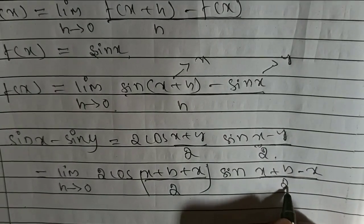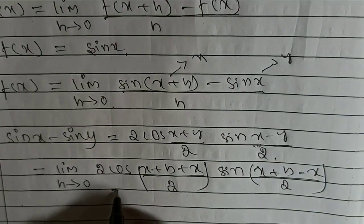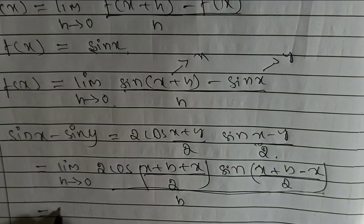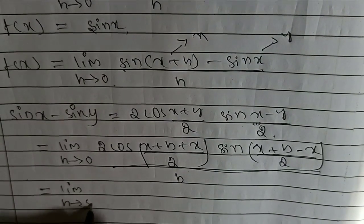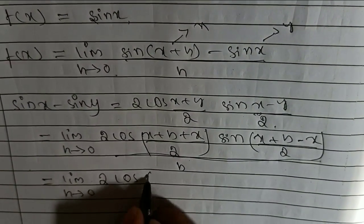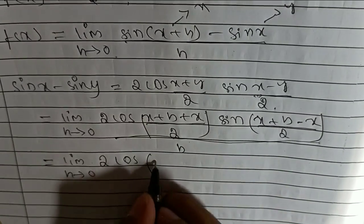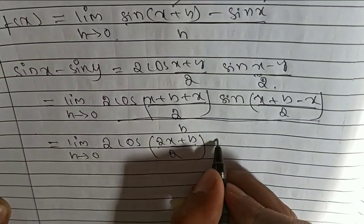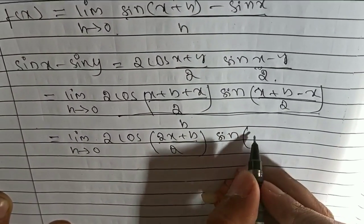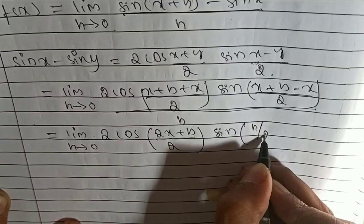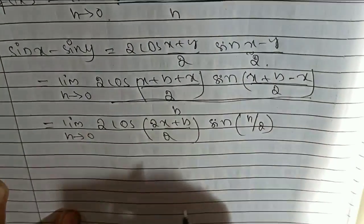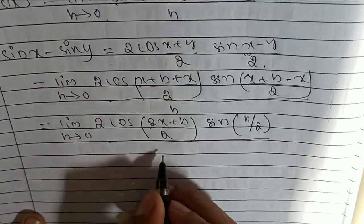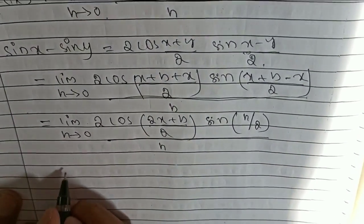This is equal to limit h tending to 0, 2 cos, here see x plus x is 2x plus h by 2, sin of h by 2. Sin x plus x minus x will get 0 upon h.